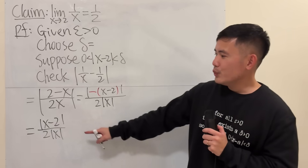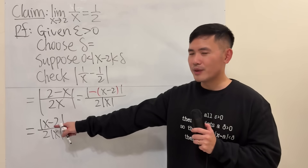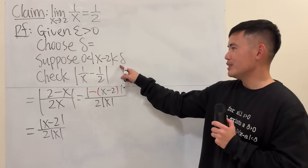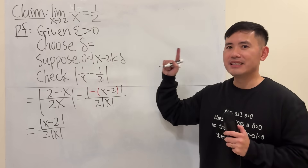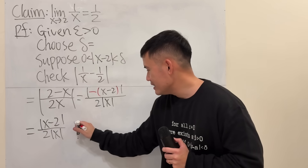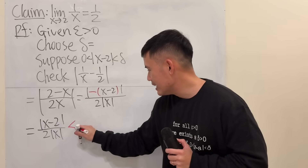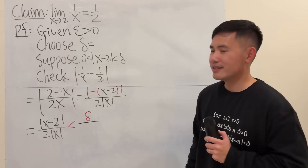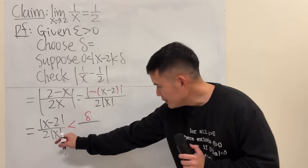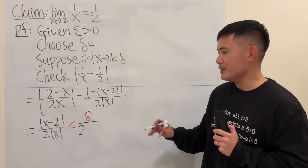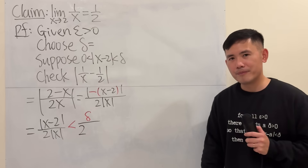So far it's just algebra. Now the first thing we can do is we already have absolute value of x minus 2, which we know is less than delta. So we can replace the numerator with delta — that's totally legitimate. The 2 on the bottom stays as 2.